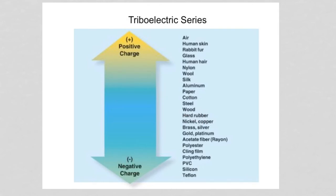Materials can be ranked in the triboelectric series. So if you take any two objects and touch them, the one higher up in the series will become positively charged, and the one lower in the series will become negatively charged.